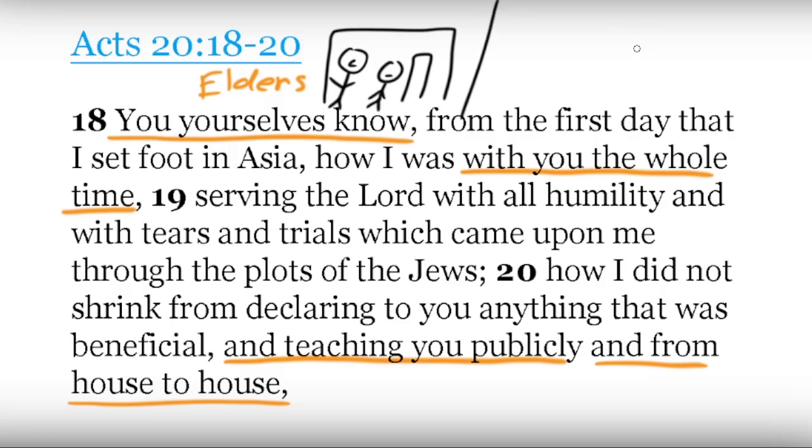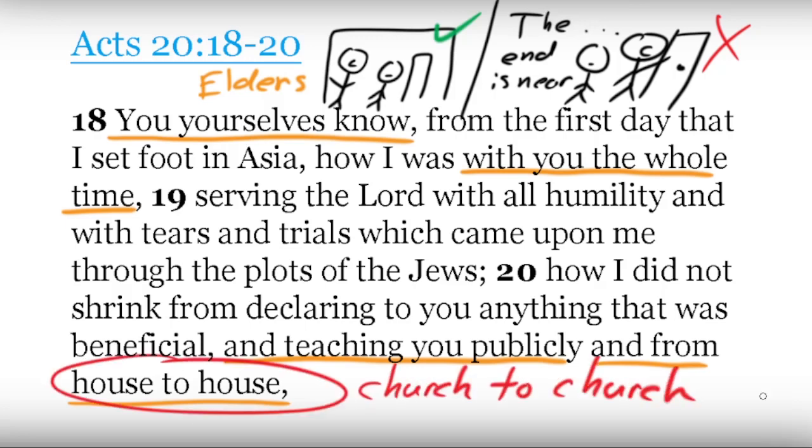So Paul's in Ephesus with these elders the whole time and teaching them publicly and house to house. From the JW perspective, why would he be teaching them house to house? Shouldn't they be teaching the homeowner? This has to be referring to places of congregation. So both of these verses are not a proof text about door-to-door ministry.